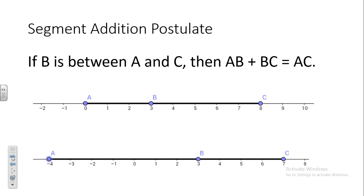Here's a new postulate: the Segment Addition Postulate. If point B is between points A and C, then the distance AB plus the distance BC equals the distance AC. Would we want you to prove that? It's so logical we wouldn't. If the distance between A and B is 3 — it starts at 0 and goes to 3, so 3 minus 0 is 3 — that makes sense.